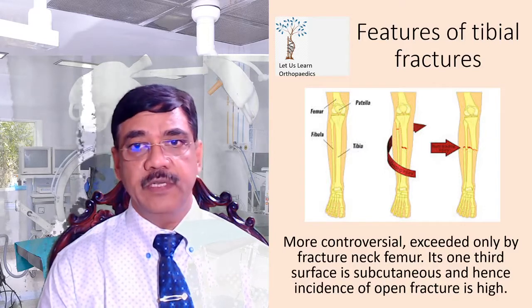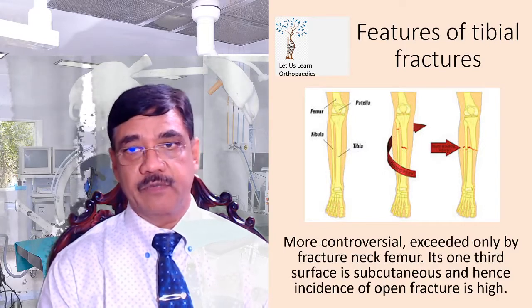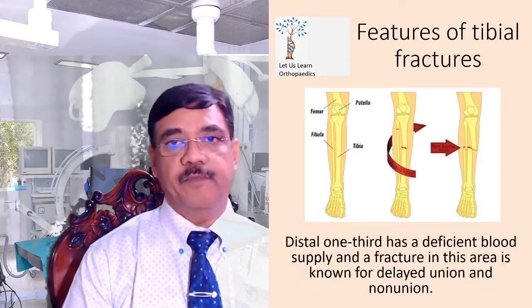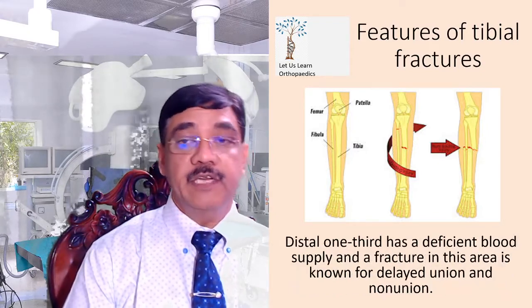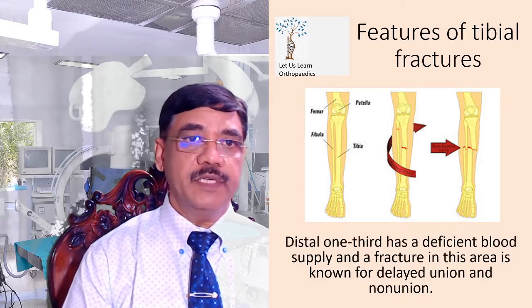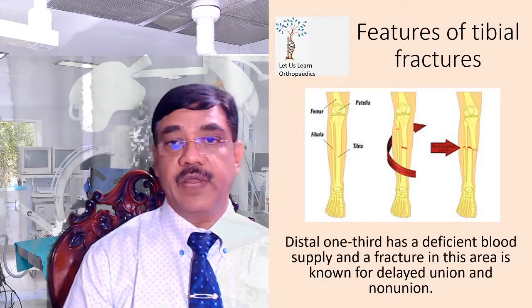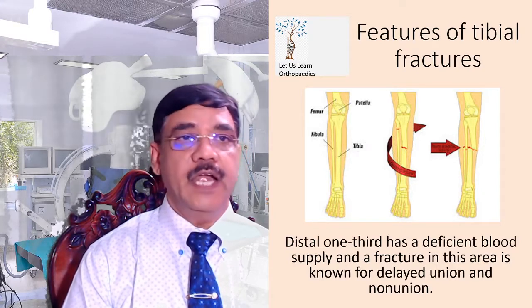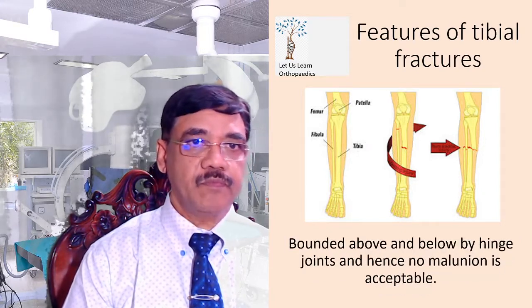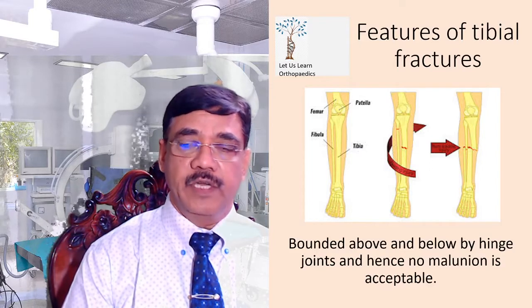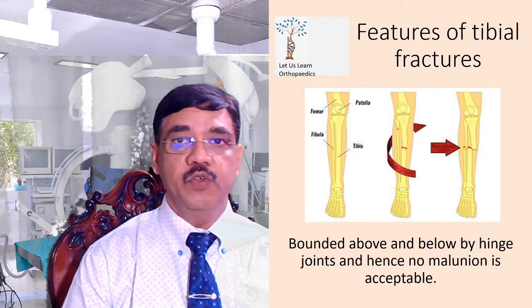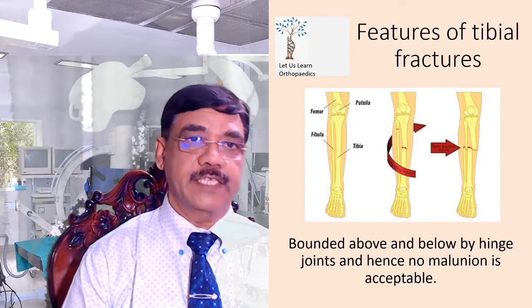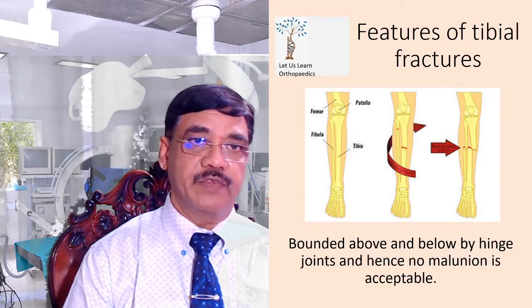Its one-third surface is subcutaneous and hence the incidence of open fracture is high. Distal one-third has a deficient blood supply and a fracture in this area is known for delayed union and non-union. Bounded above and below by the hinge joints, no malunion is acceptable in fracture shaft tibia.